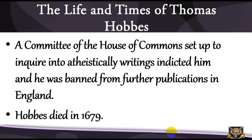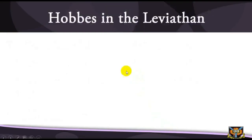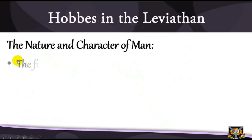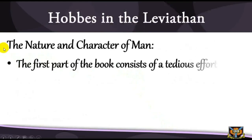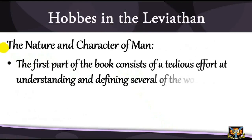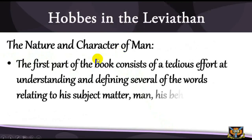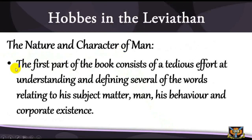Hobbes in the Leviathan: below are some essential aspects of Hobbes's political and social thoughts as contained in the Leviathan. The Nature and Character of Man consists of a detailed effort at understanding and defining several words relating to his subject matter — man, his behaviour, and corporate existence. This is consistent with the practice of his time: the Enlightenment.